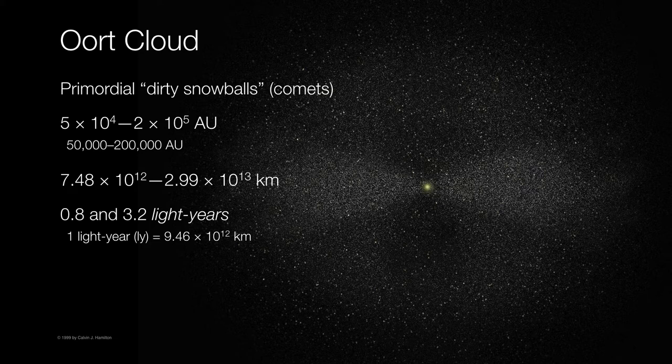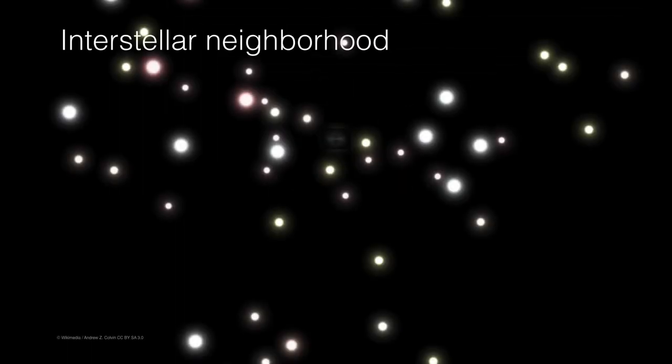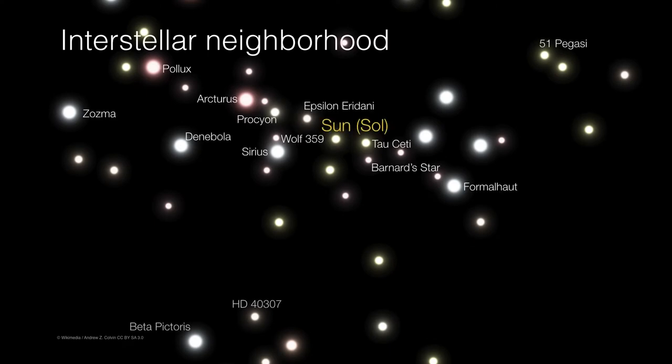So we're talking light years. A light year is on the order of about 9.5 trillion kilometers. Now the Sun is just one of a local group of stars that form our interstellar neighborhood. Many of the stars here are stars you may already be familiar with, such as Sirius, Wolf 359, Tau Ceti, and so on.